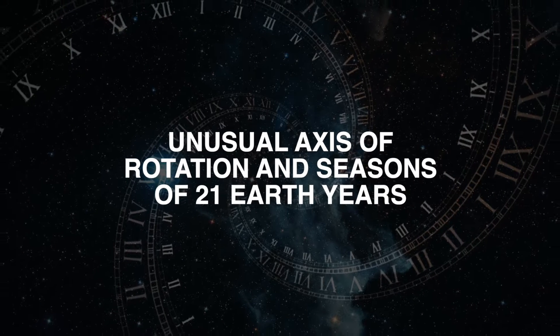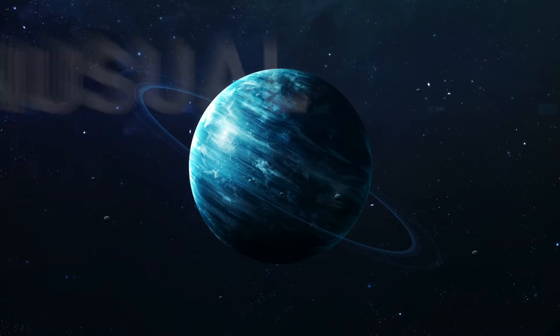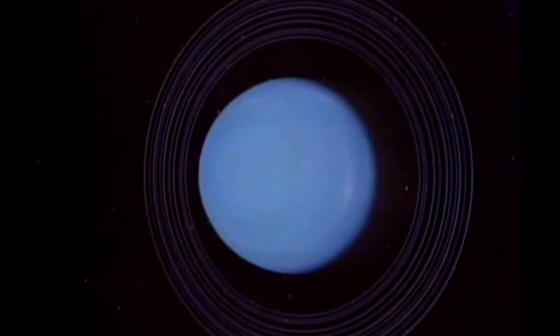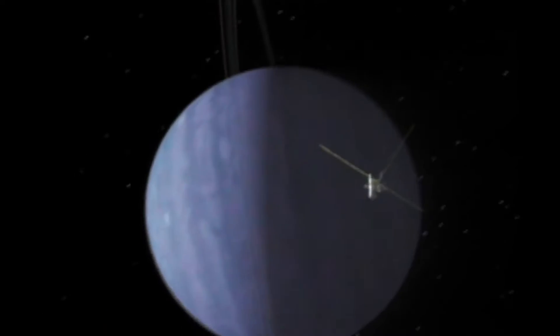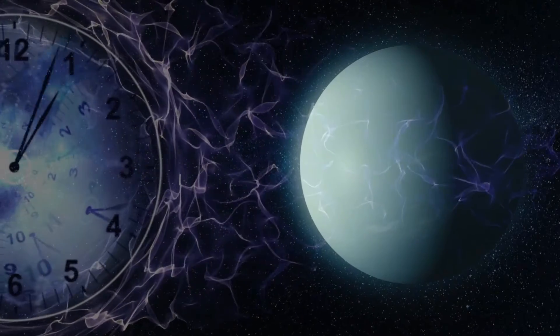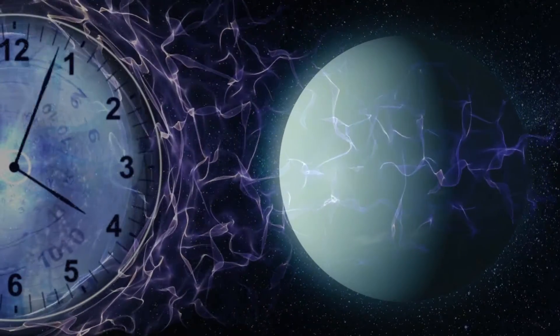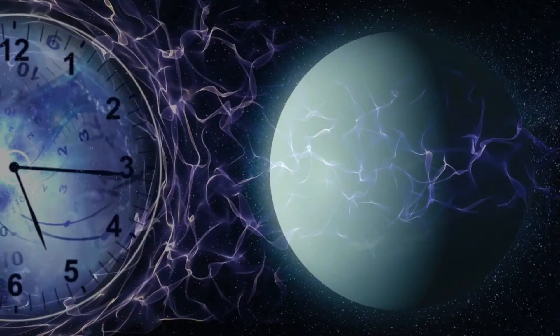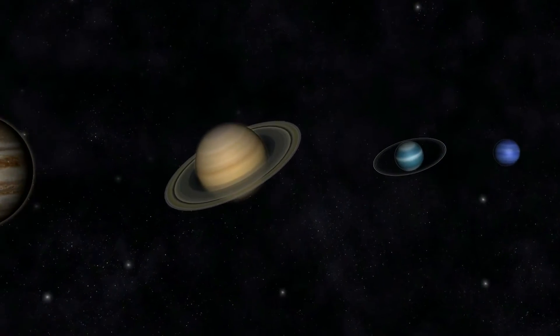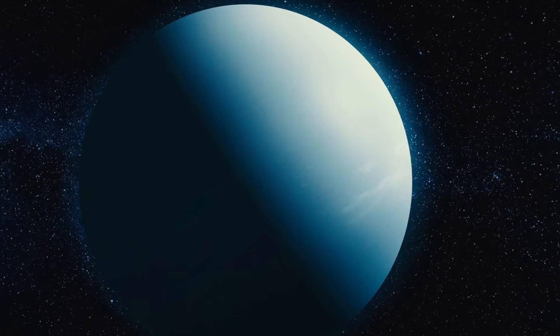Unusual axis of rotation and seasons of 21 Earth years. This planet has a mind of its own. Like Venus, Uranus rotates in the opposite direction to the Earth, from east to west. While a day on Earth lasts 24 hours, a day on Uranus is much shorter, only 17 hours and 14 minutes. The seventh planet from the Sun seems to turn on its side, resembling a marble slab rolling across the ground.